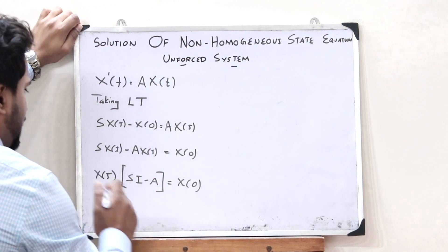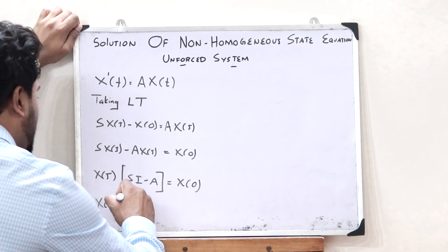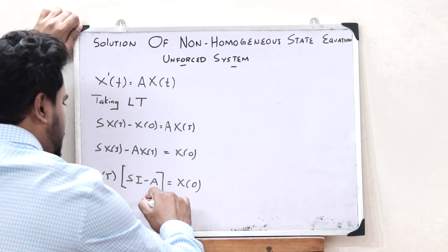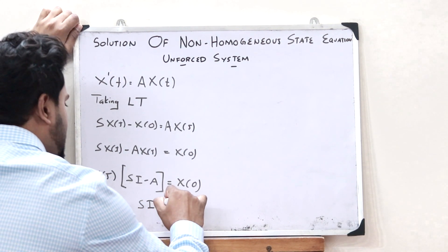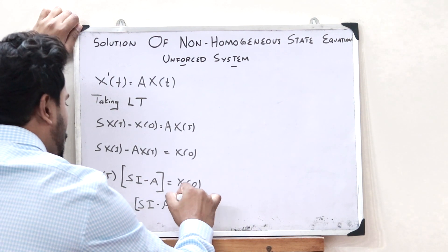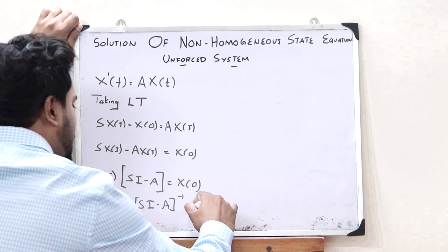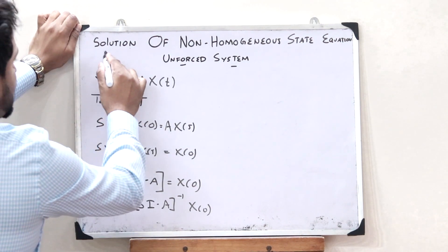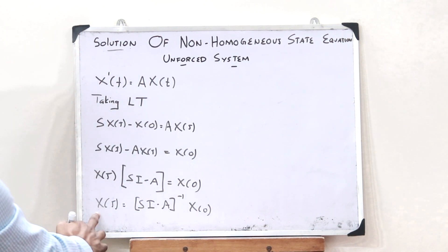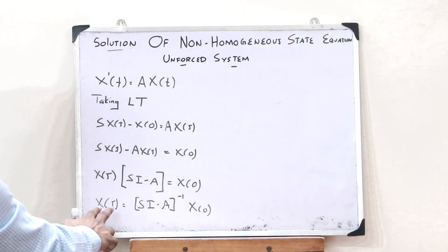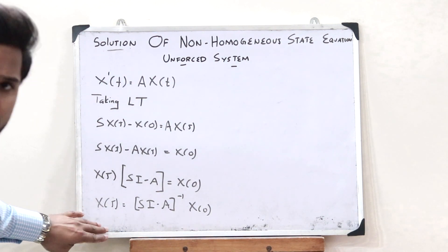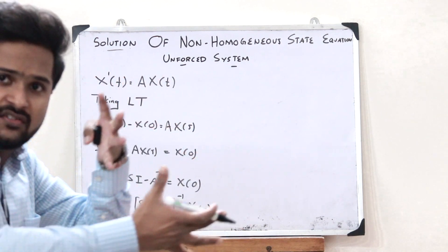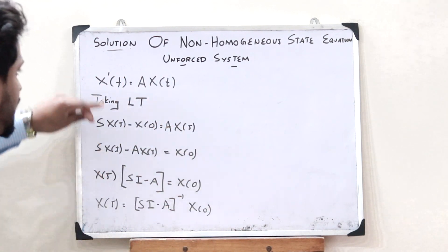So from this, we would get X(s) is equal to — we take this particular term over to the other side — so this becomes (sI − A) inverse multiplied by x(0). So now, the solution is nothing but the value of x(t). We have X(s), and in order to find x(t) from this, we have to take the inverse Laplace transform.